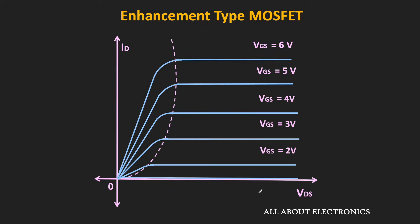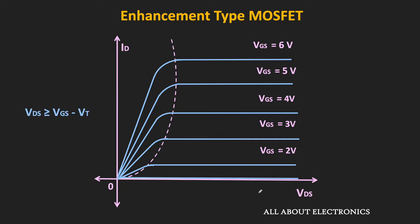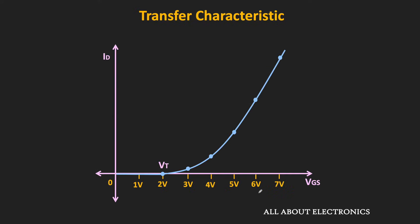So far in our discussion, we have understood that to use the MOSFET as an amplifier, it should be operated in the saturation region. Because in this region, the MOSFET acts like a voltage controlled current source, and the drain current is a function of voltage Vgs. But if you see the relationship between the drain current and the voltage Vgs, then it is nonlinear.